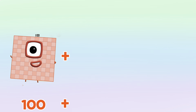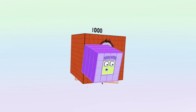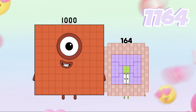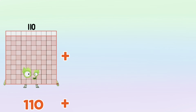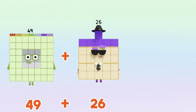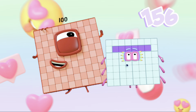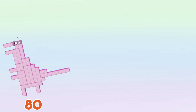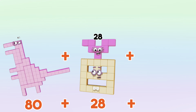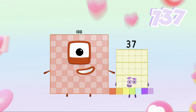120 plus 1,000 plus 64 is equals to 1,164. 110 plus 140 plus 120 is equals to 370. 49 plus 26 plus 81 is equals to 156. 80 plus 28 plus 29 is equals to 137.